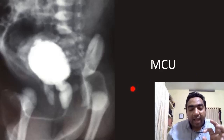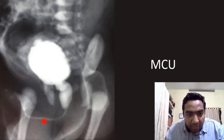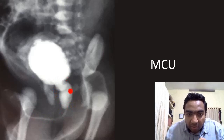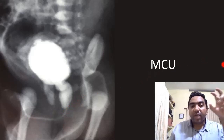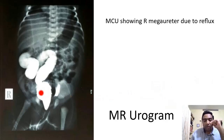For diagnosis, the first line is the micturating cystourethrogram (MCU). On MCU, you can see the posterior urethral valve in the posterior urethra — the posterior urethra is dilated and the anterior urethra is narrow. The MCU demonstrates the posterior urethral valve clearly.